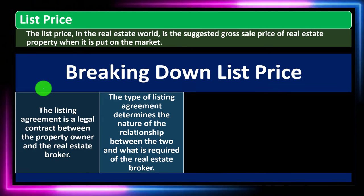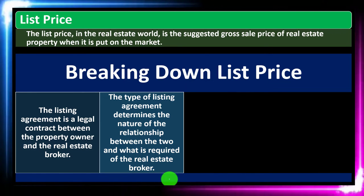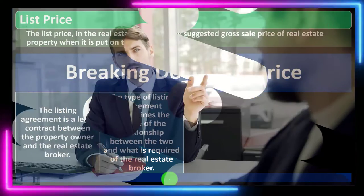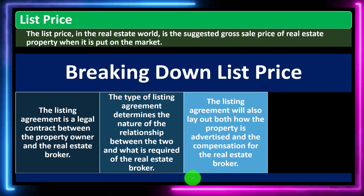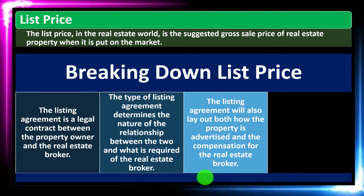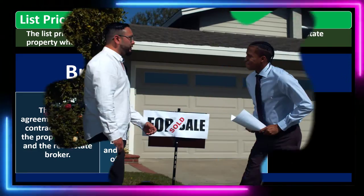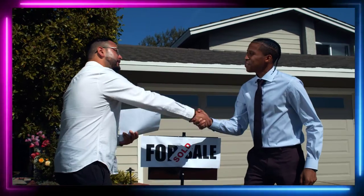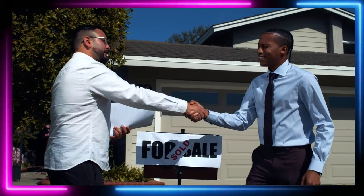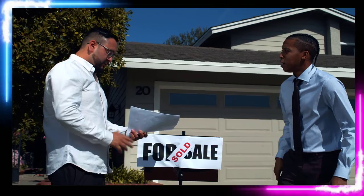There can be some variance in the relationship between the seller and the broker, and you want to lay out the terms of the contract so everybody is clear about them. The listing agreement will also lay out both how the property is advertised and the compensation for the real estate broker. The broker will be involved on the selling side with advertising the property, and you want to make sure the compensation is laid down within the contract.